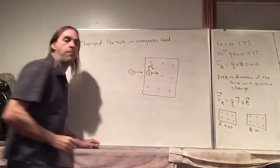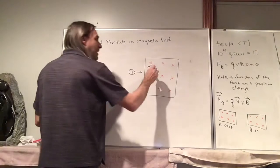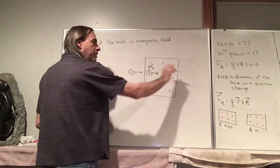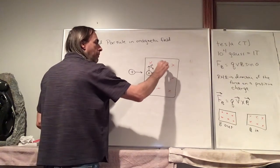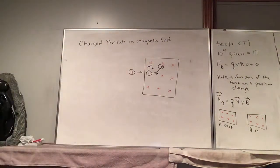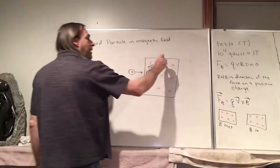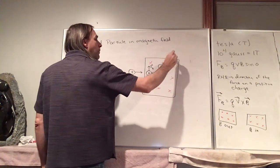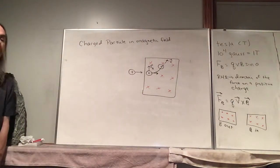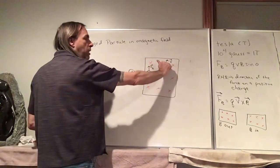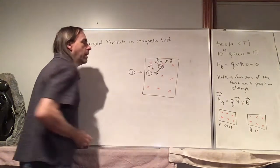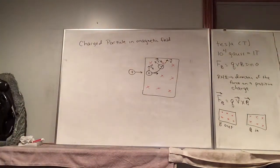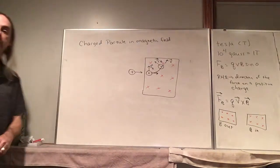That upward force causes the particle to move upwards, but it still has momentum in the x-direction, so it curls upward along some curved path. Now its velocity is in a new direction, and the magnetic force is always perpendicular to the velocity — V cross B. So the direction of the velocity and the magnetic force are constantly changing, always perpendicular to each other.